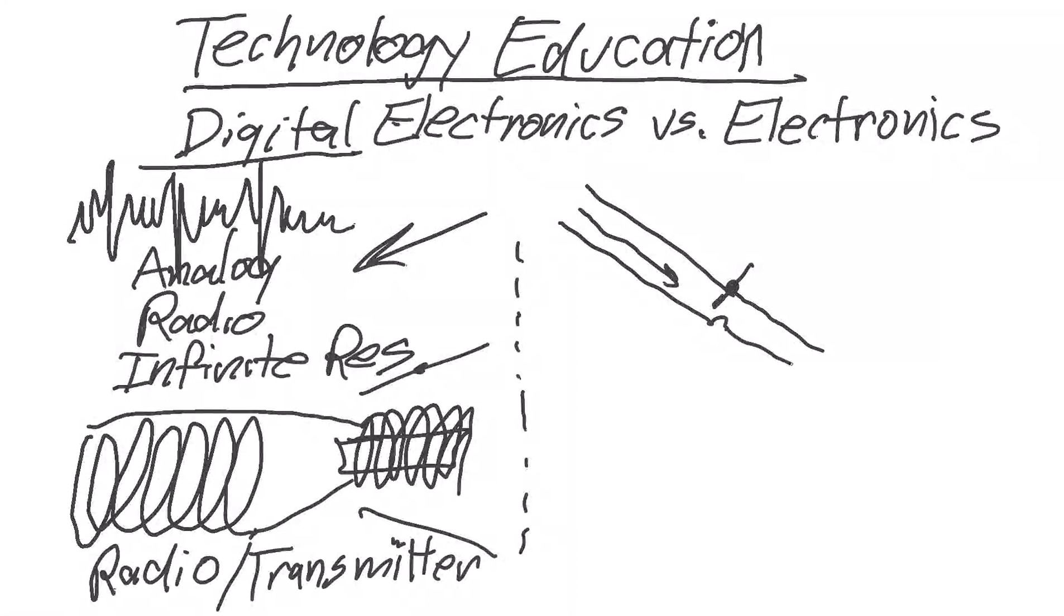And so if this represents the flow of say electronics, electrons, or even water. Visualize it as water for a second. You've taken what could be this infinite expression of wavelengths and energies and because of this switch here you have reduced that to basically two states. It is either flowing or not flowing.